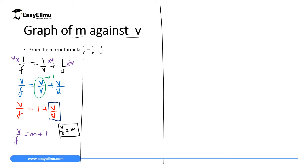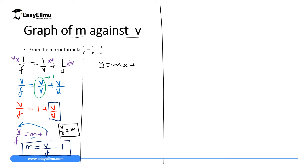Now, if we want to draw a graph of m against v, we must leave m on one side. Rearranging gives us: magnification = v/f − 1. This is a very good equation. We can write it in the form y = mx + c, where magnification takes the y-axis, 1/f is the gradient m, x is v, and the y-intercept is negative 1.